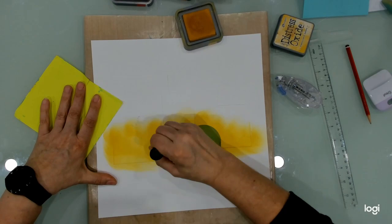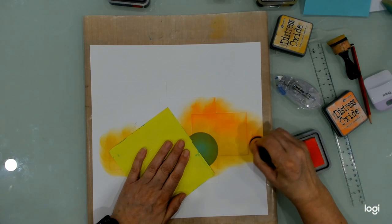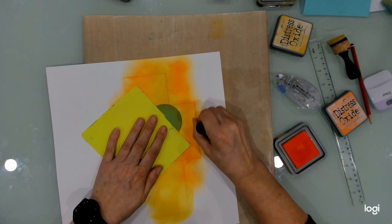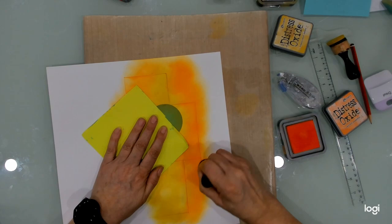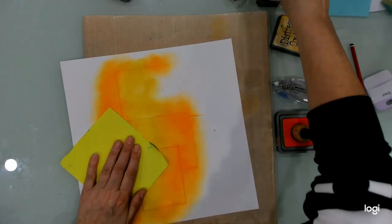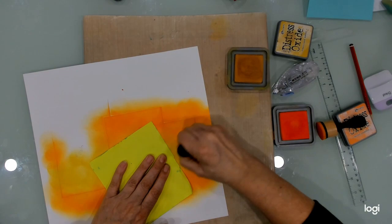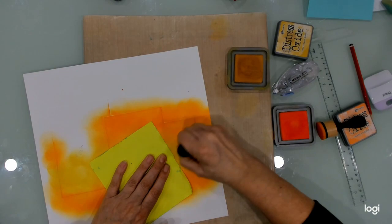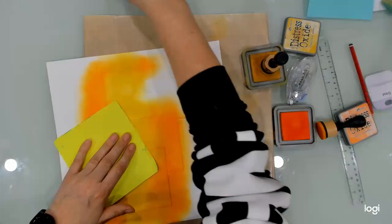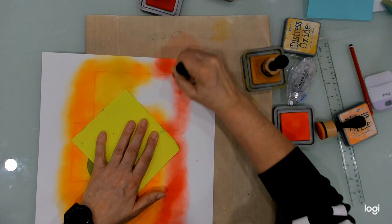Now I'm going in and blending with fossilized amber, carved pumpkin, and candied apple, and a little bit of black soot as well. I'll do one color, then I'm coming in with another color, and I'll go back and forth between these three colors of the yellow, orange, and red. If you haven't seen my other videos and you want to see the cards I've made so far, all of the links are in the description below.